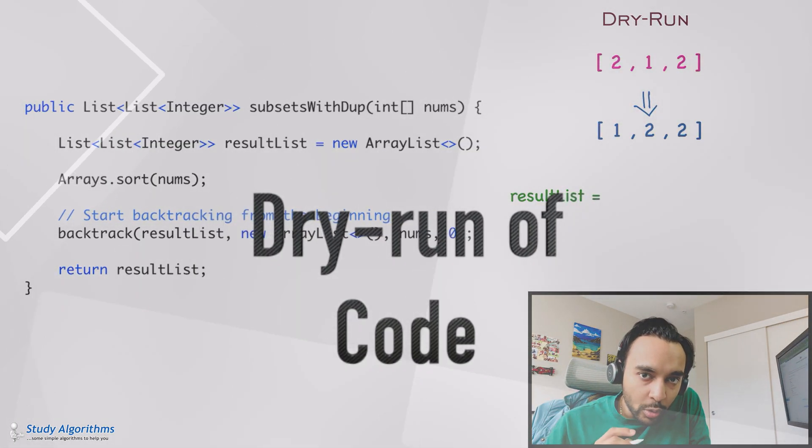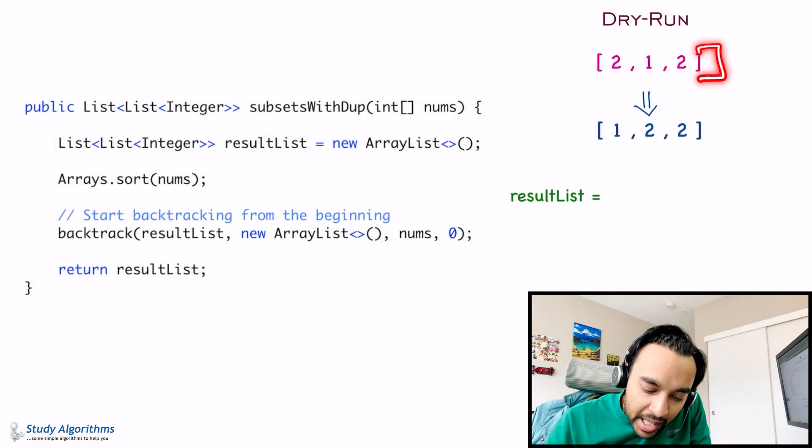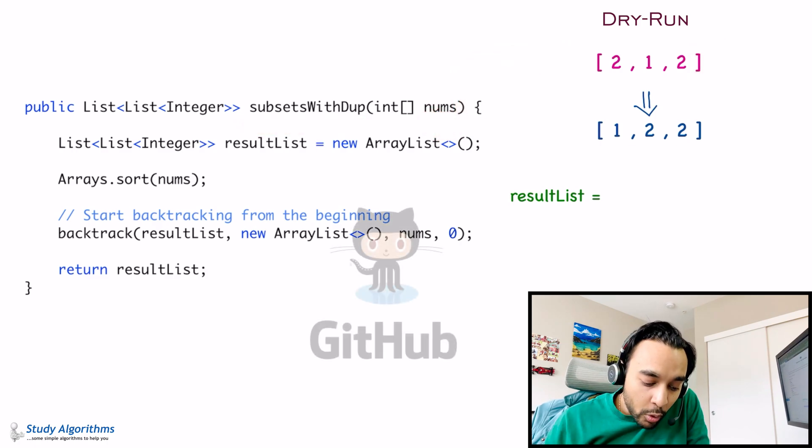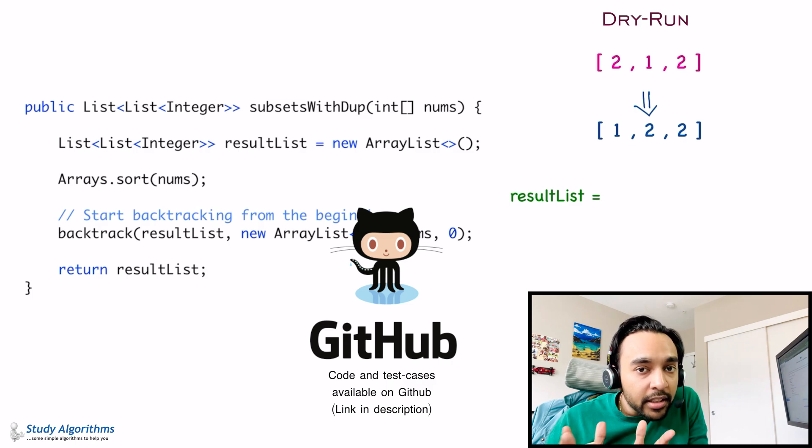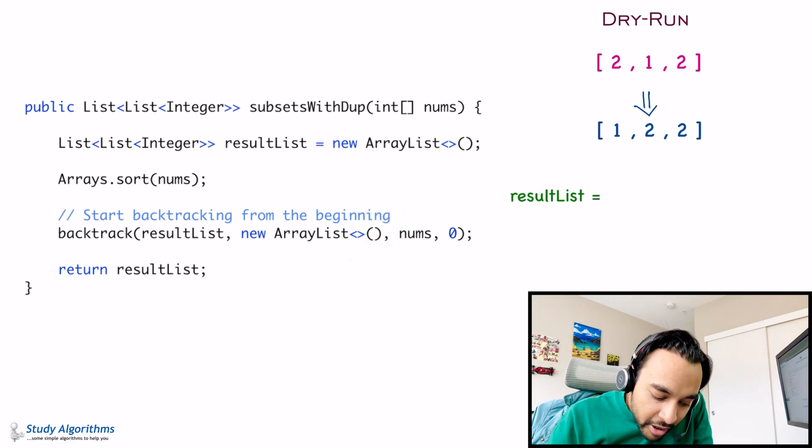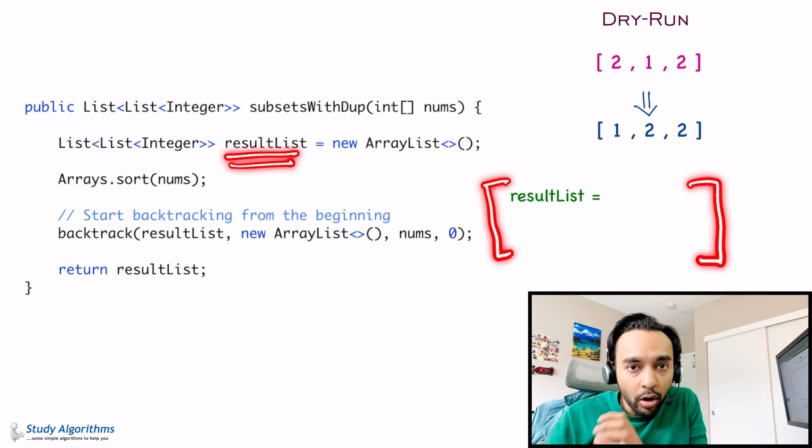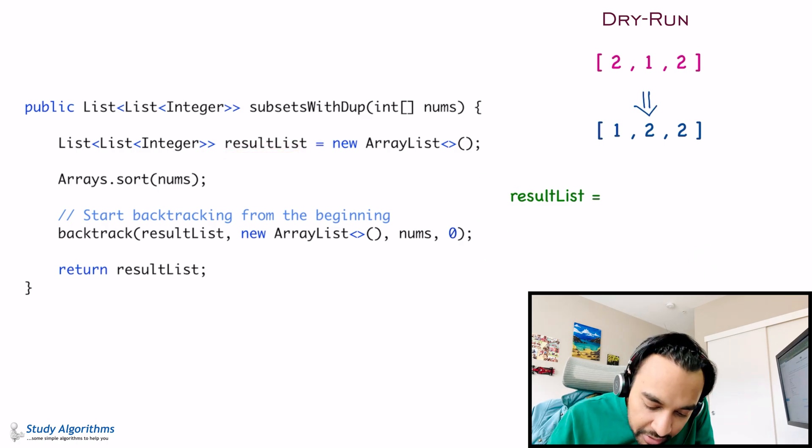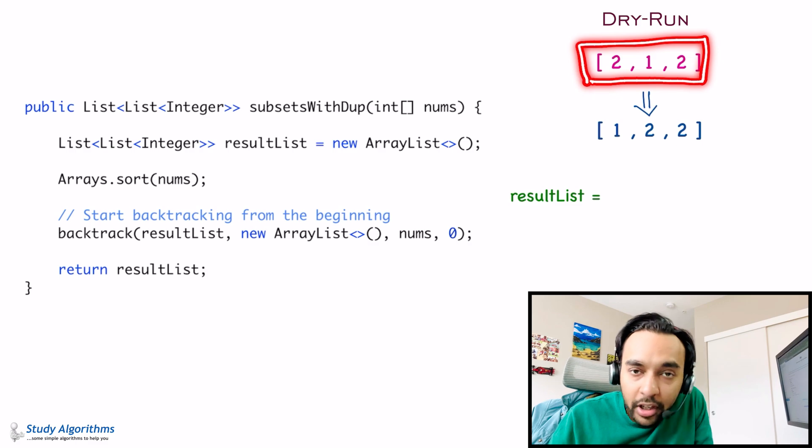Let's try doing dry run of the code and I have this sample array with me. This sample array is passed in as an input parameter to the function subsets with dupe. Right? Oh, and by the way, the complete code and its test cases are also available in my github profile. You can find the link in the description below. So, starting off with a dry run, the first step that we do is, we create a result list. So, this result list will contain all of the unique subsets. Right now, I have this test case. Right? 2, 1, 2.